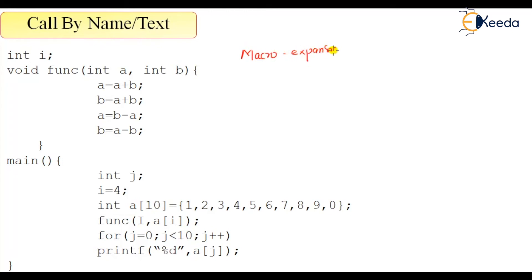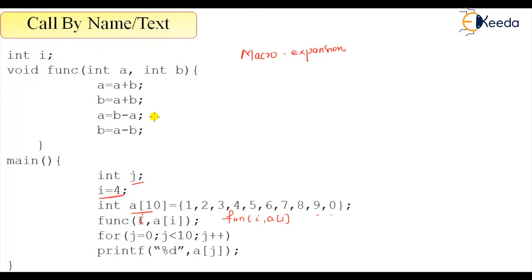Let's see this parameter passing mechanism by an example. We have i assigned to 4, there is a variable j, and there is an array a assigned values 1, 2, 3 up to 9, with the final position being 0. Then there is a function call — let me rewrite it for clarity — where i and a[i] are being passed. The concept here is that we are not interested in the value at all; we just consider it as text and do the macro expansion.